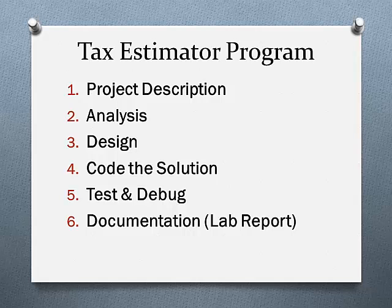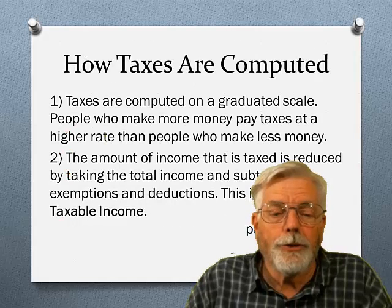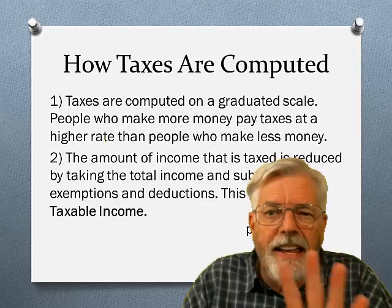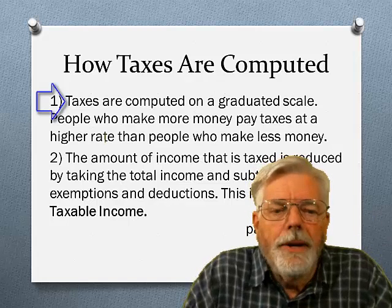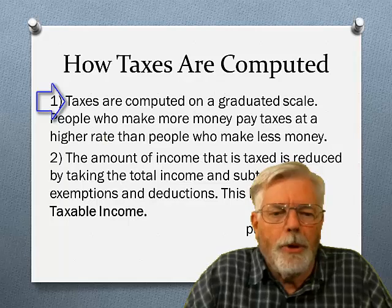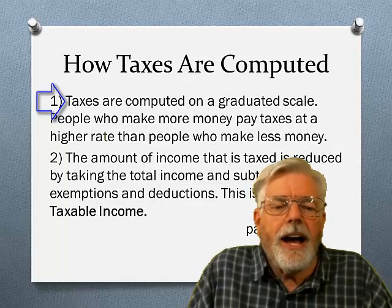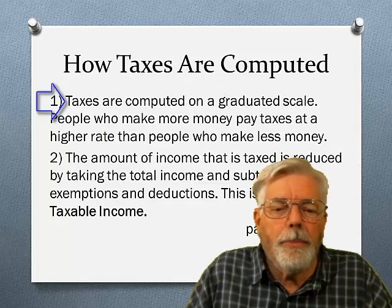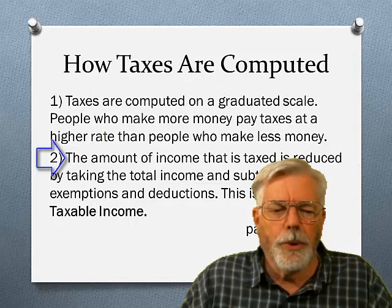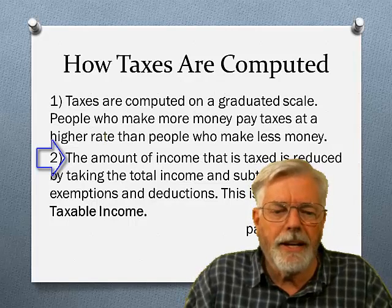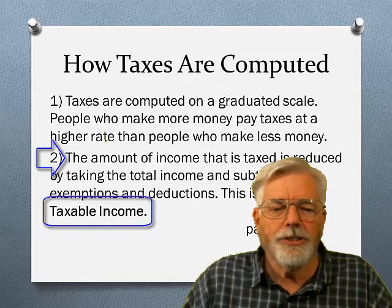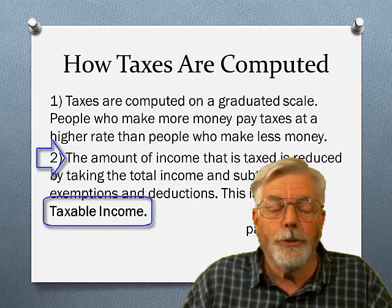Here is a very short course in how taxes are computed in five easy steps. Step 1: taxes are computed on a graduated scale — people who make more money pay taxes at a higher rate than people who make less money. Step 2: the amount of income that is taxed is reduced by taking the total income and subtracting exemptions and deductions.